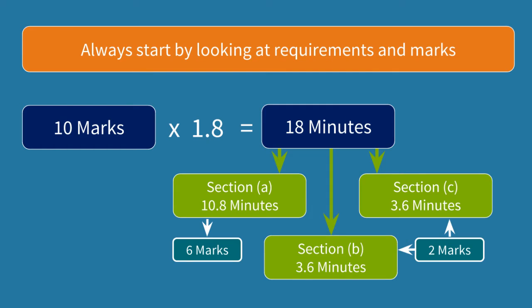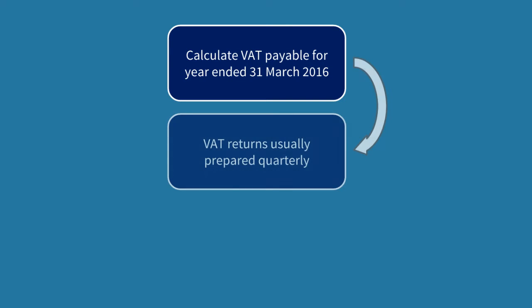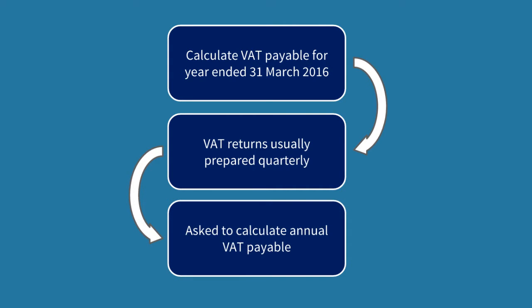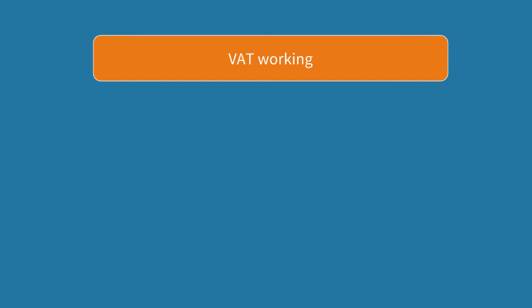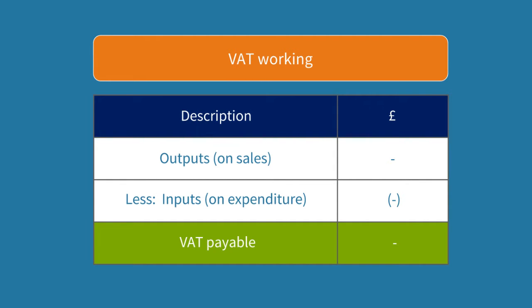So without further ado let's look at the requirement for part A. We need to calculate VAT payable for the year ending 31st March 2016. VAT returns are usually prepared quarterly but in this question we've been asked to calculate the VAT payable for a year, using a 12-month period rather than a 3-month period. To calculate VAT payable the first thing we need to do is set up our pro forma. Leave about half a page between outputs and inputs to give you space to add in the relevant items.